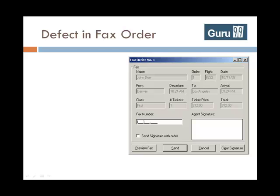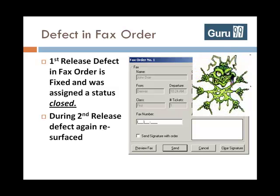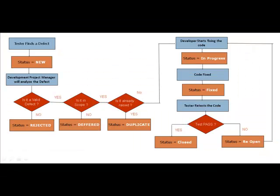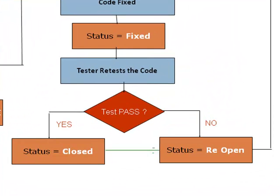Consider a situation where during the first release of the flight reservation application, a defect was found in fax order, which was fixed and assigned a status: Closed. During the second upgrade release, the same defect again resurfaced. In such cases, a closed defect will be reopened.